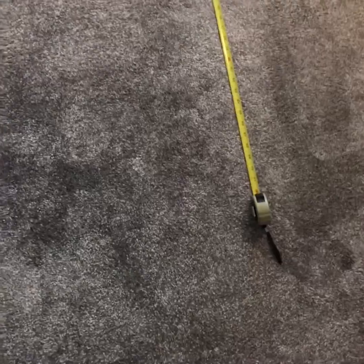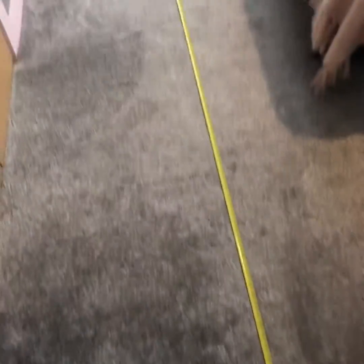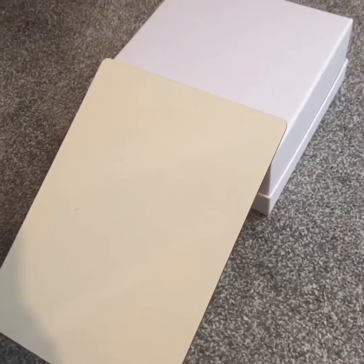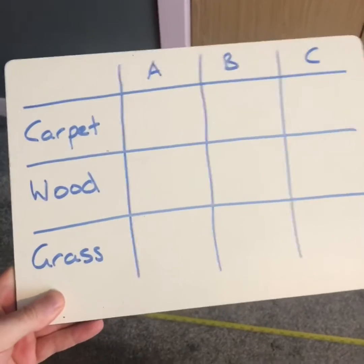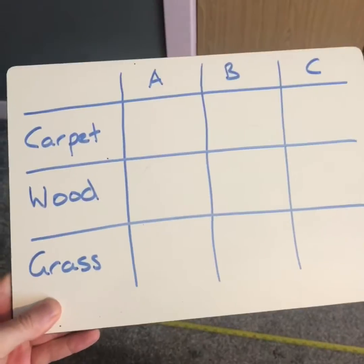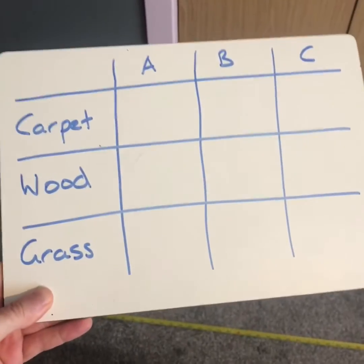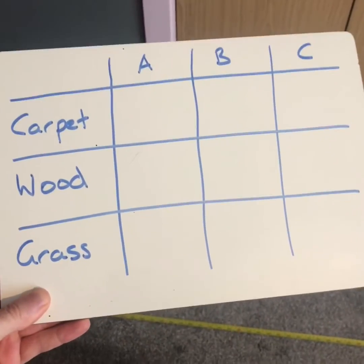And we can investigate this a bit more using a ball. For this, I need my ball, a measuring tape, and I also need to create a ramp. I've done one just with — well, this is a whiteboard, but I can use a bit of cardboard and a wee box. I've created a wee table here because I'm going to investigate friction on carpet, on wood and on grass, and I'm going to test each one three times and record the distance that my ball travels. Before I start, I need to make a hypothesis — that's a prediction as to what I think will generate the most friction, and I can come back to it at the end.